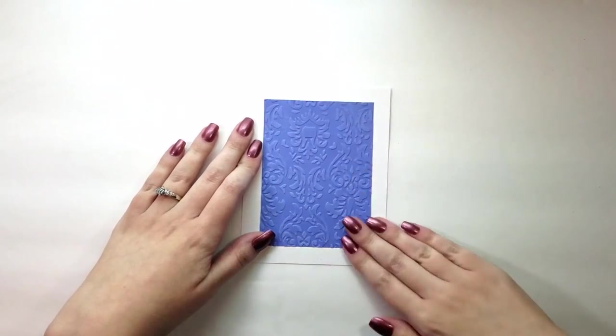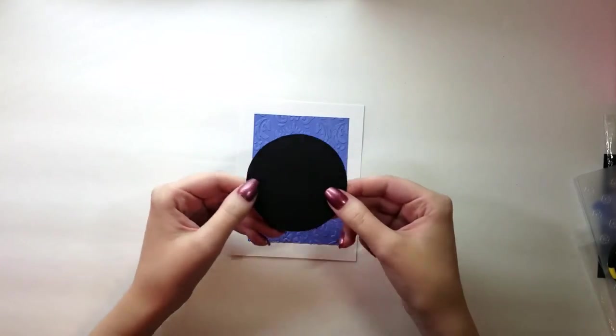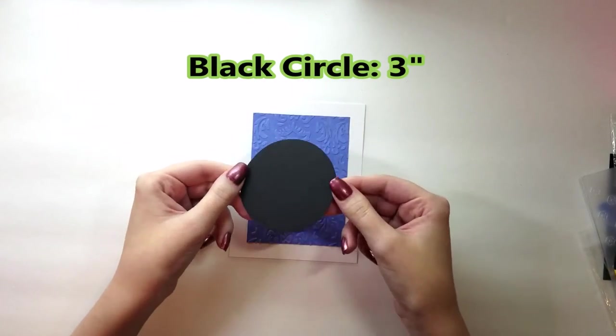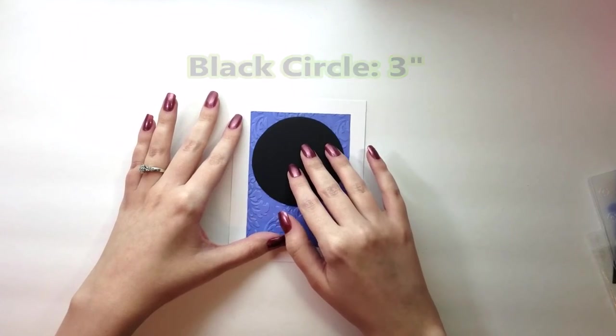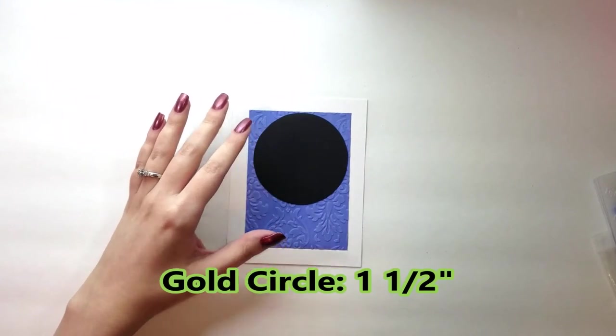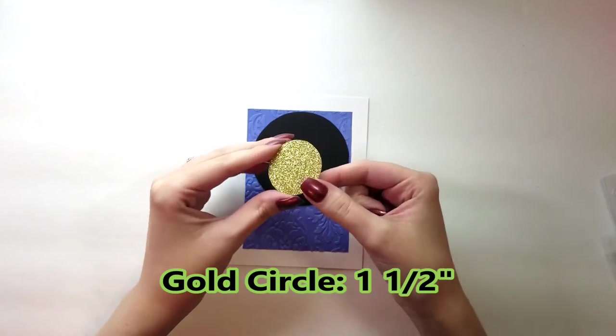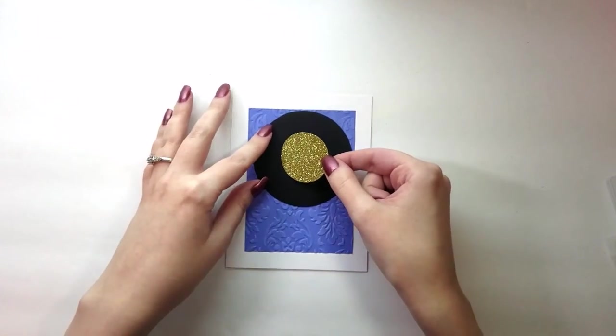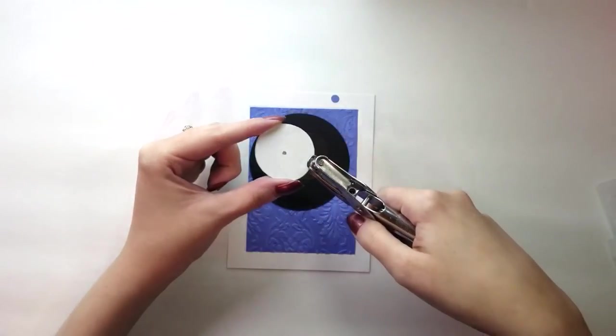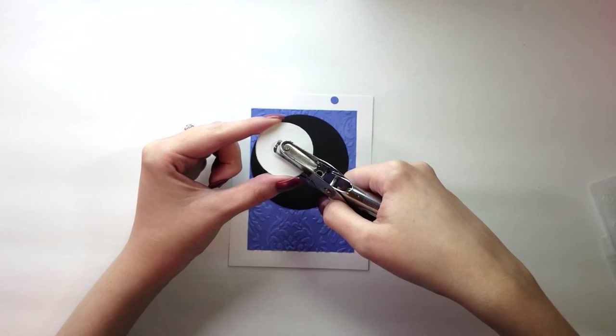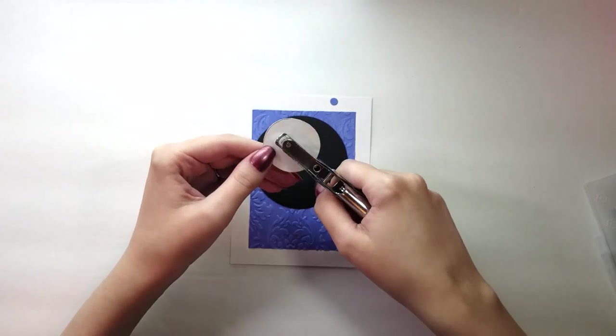Once the panel is adhered down to the base, I'm going to go ahead and start decorating. Now this circle I have cut and I have a smaller circle and you'll see the measurements there on the screen and I'm just going to punch a hole right in the center of the smaller circle and this will give the look of a vinyl record once it is adhered down.